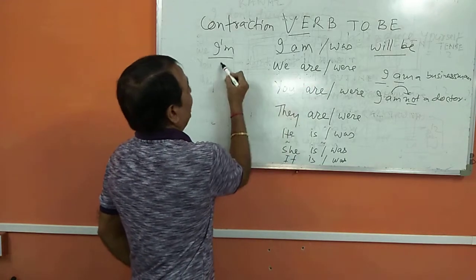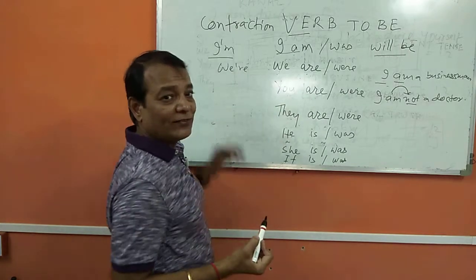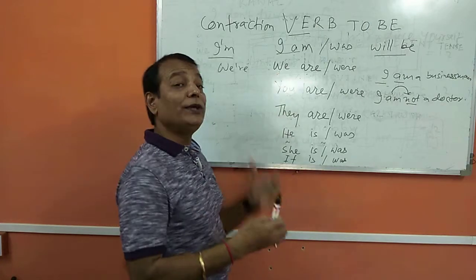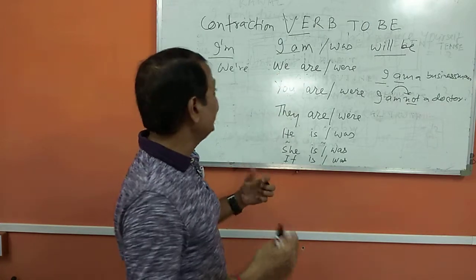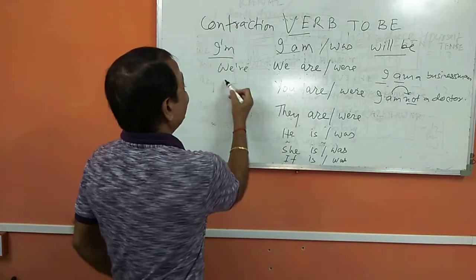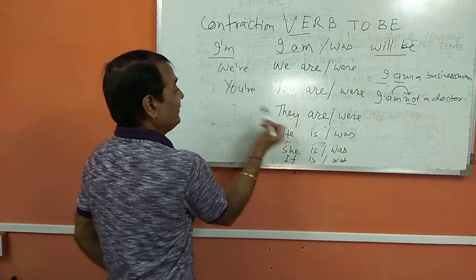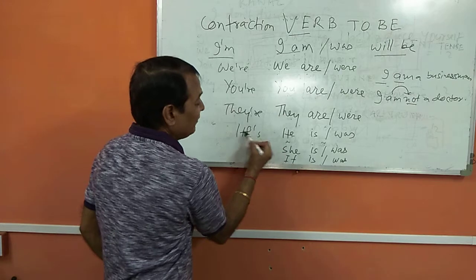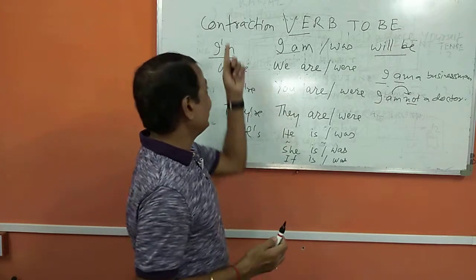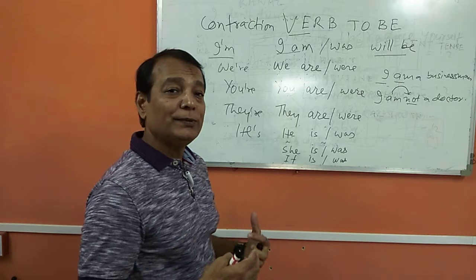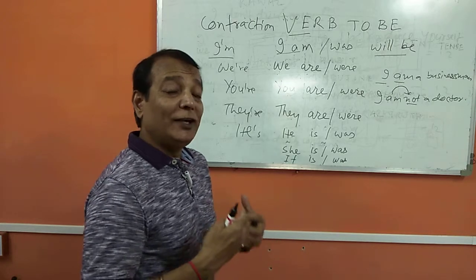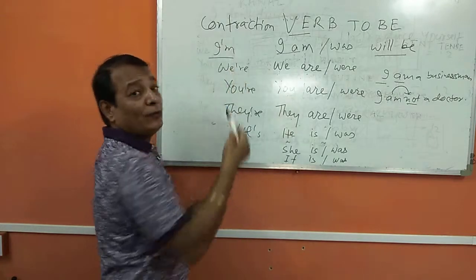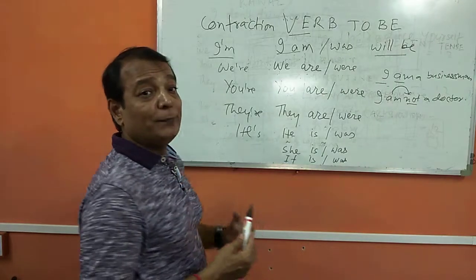We are — the contraction is 'we're.' The pronunciation will be a bit different. When you pronounce 'we are' in full form versus 'we're' in contracted form. The same way: you're, they're, he's — he's my friend. This contraction will help you enhance your fluency. It is very much necessary for a fluent speaker. Contraction is required for the purpose of fluency improvement.